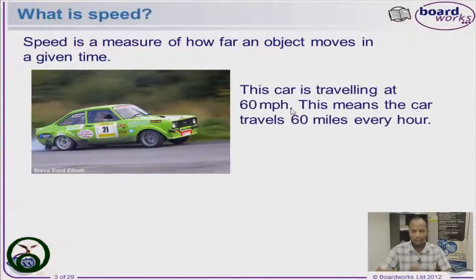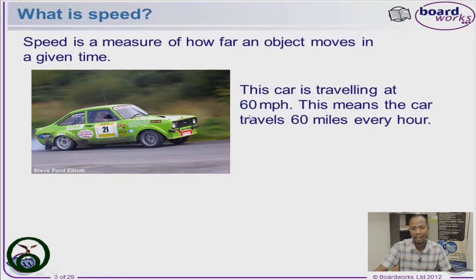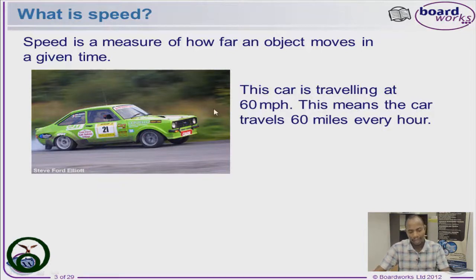The speed of an object is how fast the object is moving. For example, let's take a look at a car that is moving a distance of 60 miles in one hour. Therefore the speed will be 60 miles per hour. Speed deals with the distance you move and the time you take to move that distance.